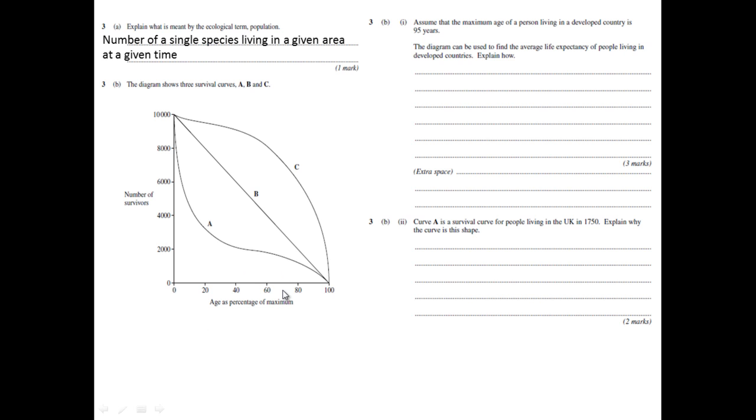What it is essentially saying, where you have very little survivors, so close to zero, then this value here will correspond to 95 years. Now, it says life expectancy of people living in developed countries. You need to use something on this graph to determine the average life expectancy of people living in a developed country. You need to decide which line it is.